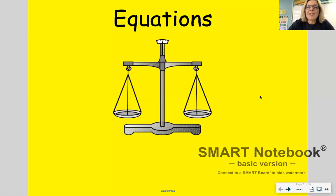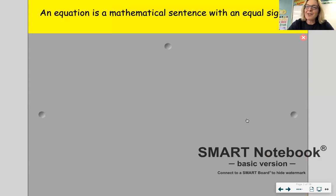Today we're going to continue working with variables and equations. So an equation, the first thing we need to do is really understand what an equation is. An equation is like a mathematical sentence, but it has to have an equal sign. That's what makes it a complete sentence, a complete thought.